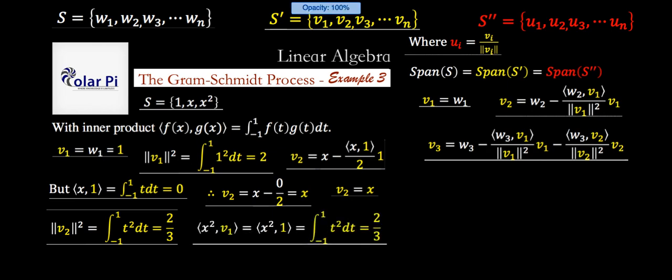And so next, we figure out what this is, which is the inner product between w3 and v1. And so again, we're using this definition here. But clearly in here, we're going to get t squared times one. And when we integrate, we're going to get two thirds. And so yeah, it just coincidentally turned out to be the same as this here. Next, we're going to need to figure out what this inner product is right there. And this inner product right there is going to be, it's going to be this here. And v2 is x and w3 is x squared. So we get t squared times t, which is t cubed. Earlier, I stated that the integral from negative a to a of any odd function, i.e. t cubed is equal to zero. So we're going to use that here.